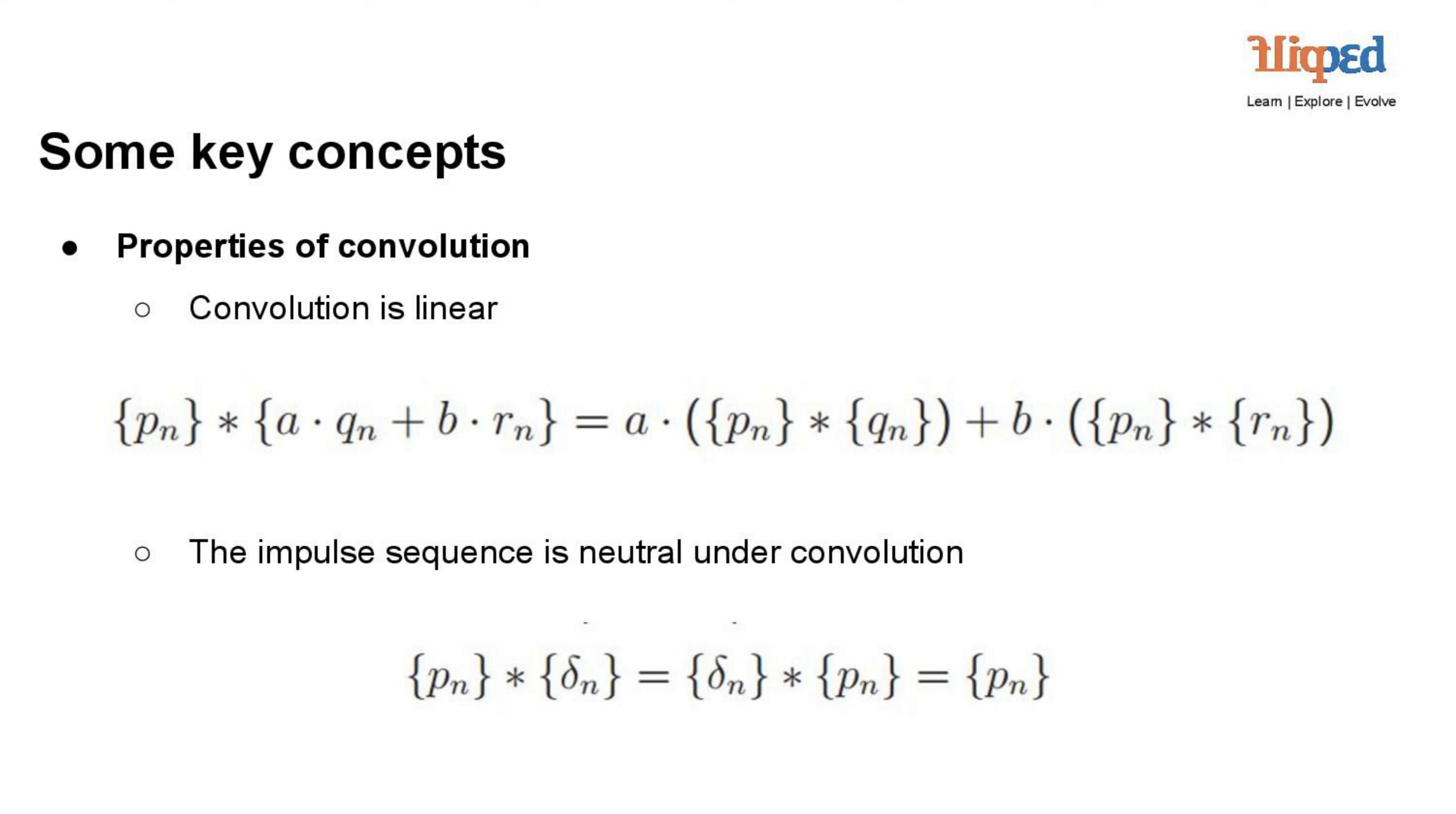When the impulse sequence delta(n) is convolved with any other sequence, the result is the same sequence. Mathematically, for any sequence x(n), the convolution with the impulse sequence is given by p(n) into delta(n) equals p(n). The impulse sequence acts as the identity element for convolution, leaving the input sequence unchanged.